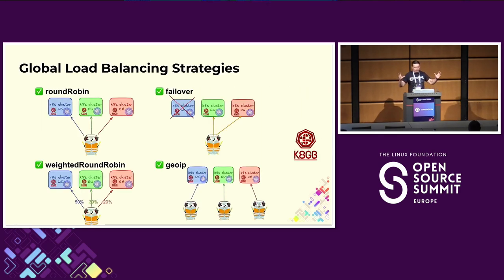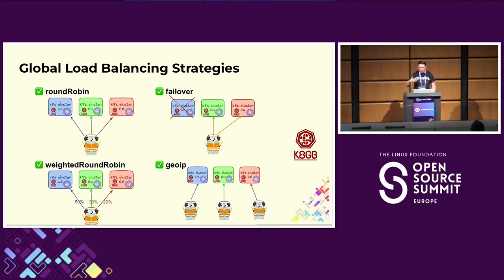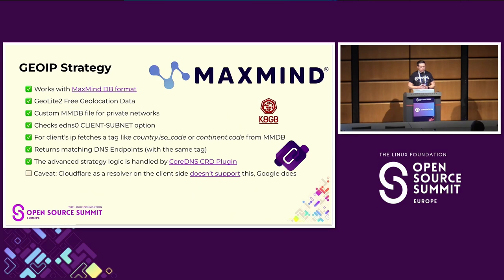The global load balancing strategies map back to the use cases: round-robin for spreading traffic across multiple clusters randomly and roughly equally; weighted round-robin for assigning percentages of traffic steering to specific geographical locations; failover — probably the most popular strategy — for straightforward failover between primary and secondary clusters, predictable and easy to test disaster recovery scenarios. GeoIP is probably the most advanced strategy, where we dynamically decide the closest location from a geographical database. That's the strategy most relevant to the title of this talk, so let's dive into GeoIP.